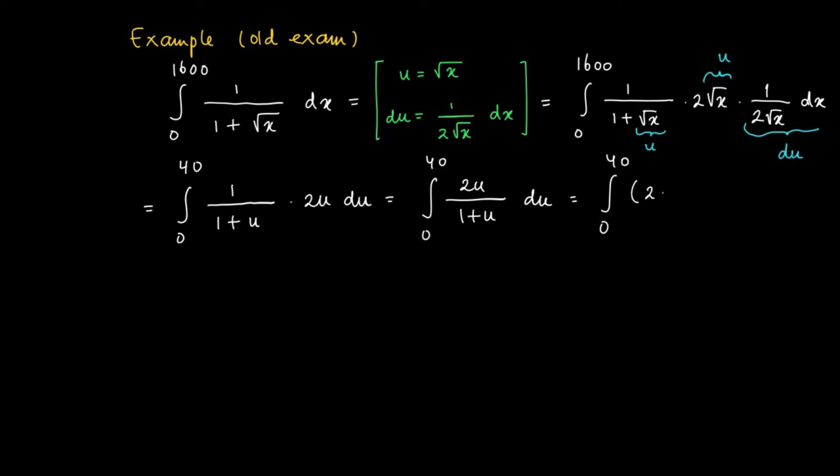And we're going to write this rational function a little bit differently. So this equals 2 minus 2 over 1 plus u du.